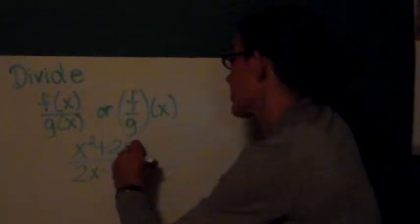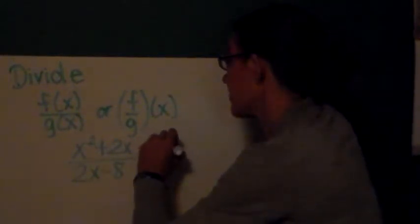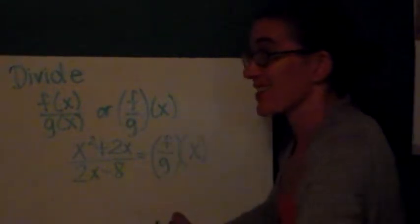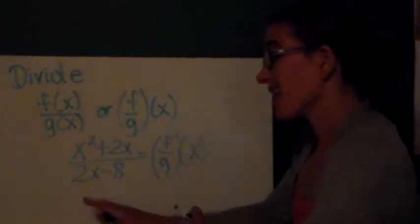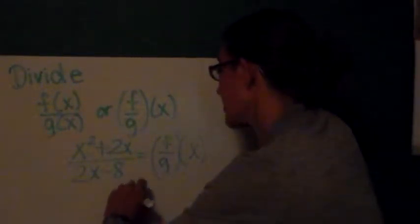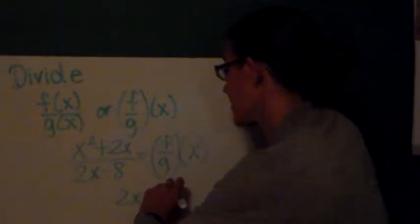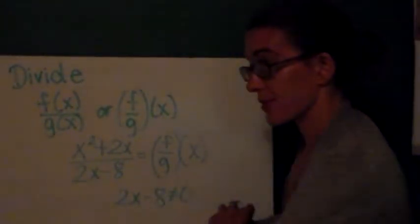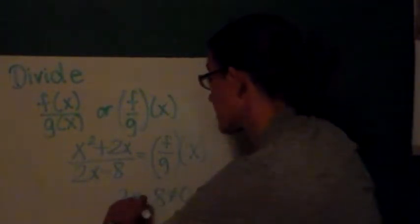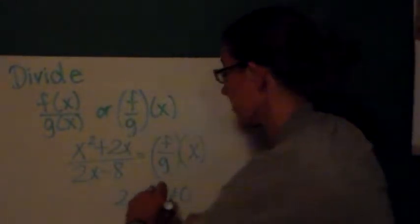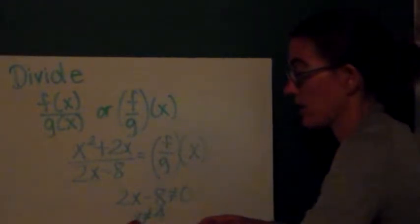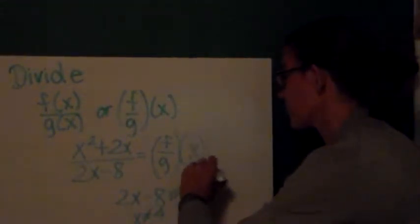My domain is negative infinity to positive infinity with both of these, but now I've got x in the denominator. So, that means the denominator of a fraction cannot be equal to 0, and therefore 2x - 8 cannot be equal to 0. Through the magic of algebra, I solve this and find out x cannot be equal to 4. So, my domain is all real numbers except 4.